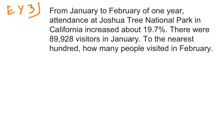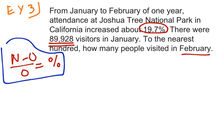Example 3 is an example of how to use a percent increase. So here they've given us a problem from January to February of one year. Attendance at Joshua Tree National Park in California increased about 19.7 percent. So they tell us the percent increase. That's different than the other problems we've had. There were 89,928 visitors in January. And then they want us to calculate how many people visited in February. So they haven't told us the new amount. So if I look at my n minus O over O equals percent, I don't have the new amount. So I'm not sure I can use that model. So the first thing I'm going to do is figure out the number of visitors that increased. So I know the percent, and I know the original amount.